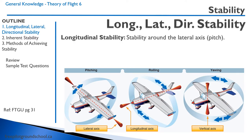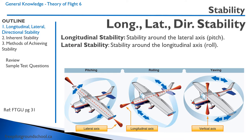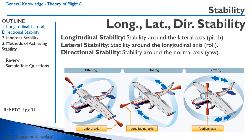Longitudinal stability is stability around the lateral axis, so pitch. If the aircraft suddenly gets pitched up, it will tend to return to the cruise attitude. Lateral stability is stability around the longitudinal axis, or roll — if one wing gets picked up, the aircraft will tend to return to a wings-level attitude. Lastly, directional stability is stability around the normal or vertical axis, so yaw, left and right.